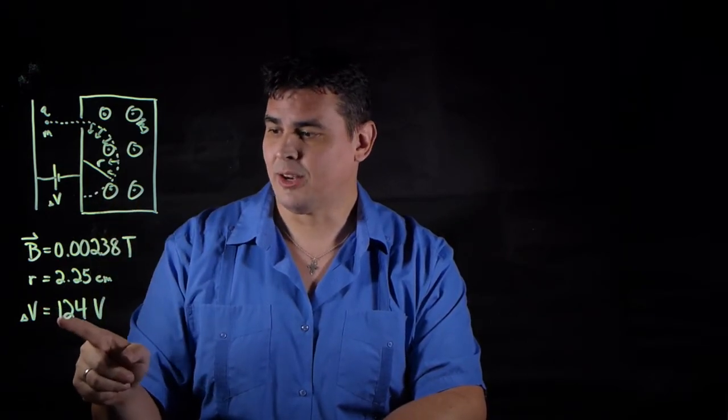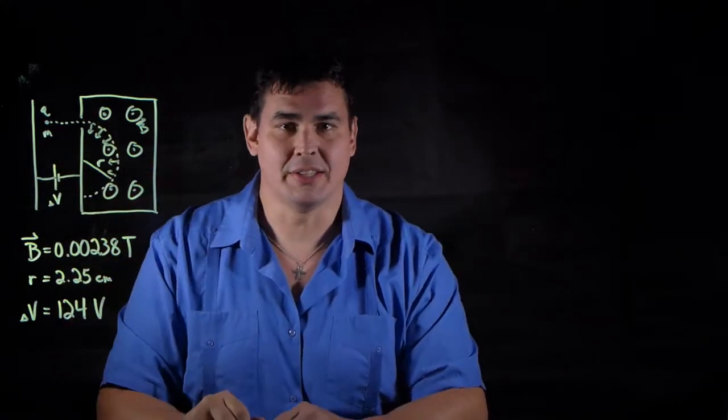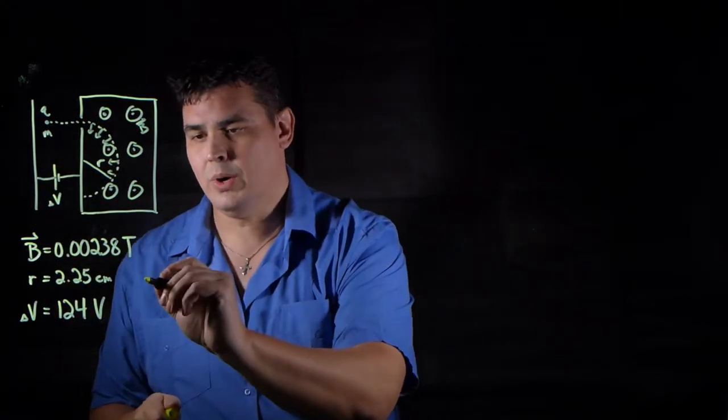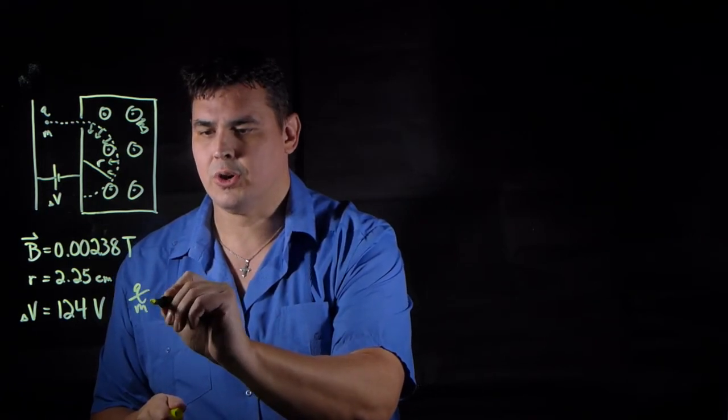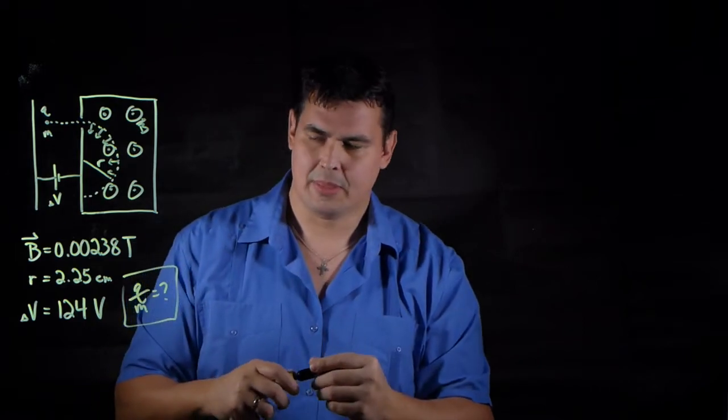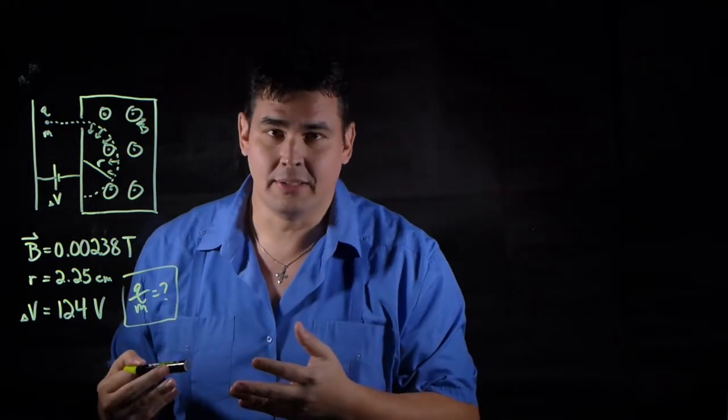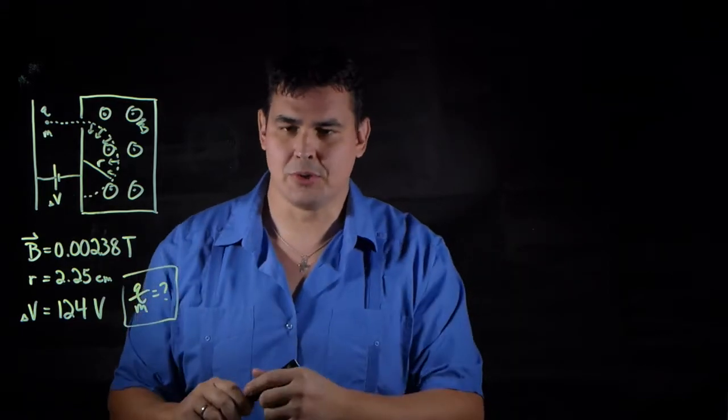I know the radius of that path and have an accelerating voltage here that makes that thing speed up from rest and get injected. The question is, what is the charge-to-mass ratio? That's what we're trying to figure out. This is a mass spectrometer problem.